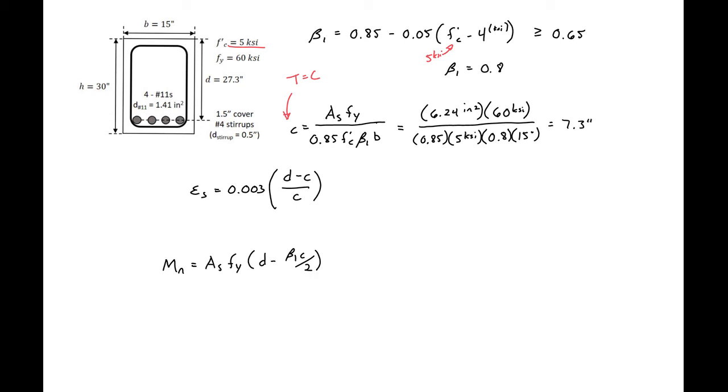We can then use our C to determine if our steel is yielded and if our steel is in the tension controlled region. We'll have 0.003 times our D, 27.3 inches, minus 7.3 inches, all divided by C, 7.3 inches, to give us an epsilon S, or the strain in our steel of 0.0082. We can see that this is greater than our tension controlled limit of 0.005, so we're okay here.